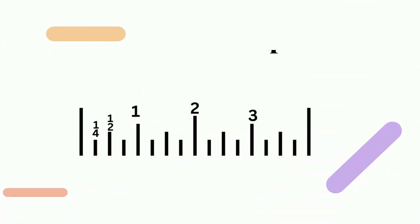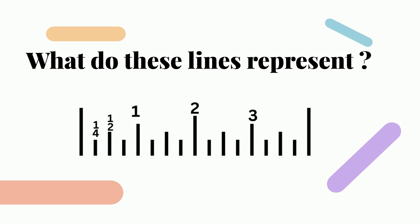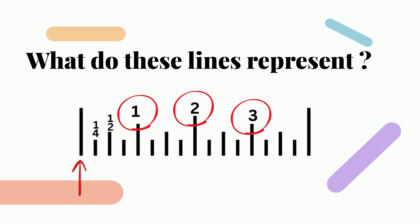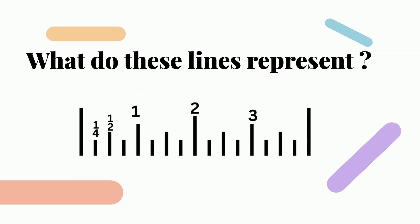To begin with, what do all these lines represent? Let's break this down. If you look here, it begins at zero and then you have a one, two, and a three. Each of these will represent one inch, two inches, three inches, etc.